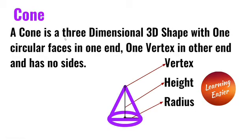A cone is a three-dimensional shape with one circular face at one end, one vertex at the other end, and has no sides.